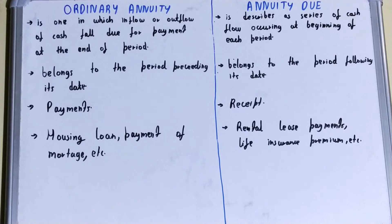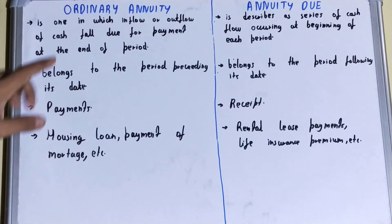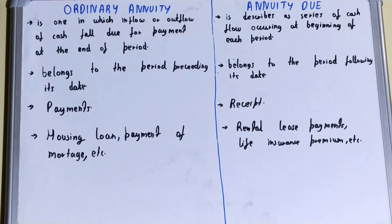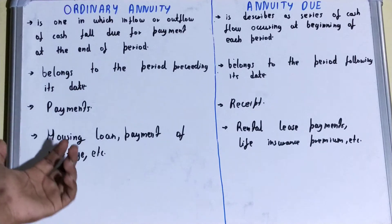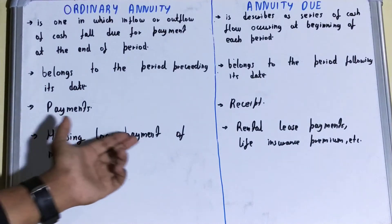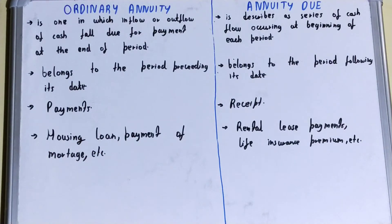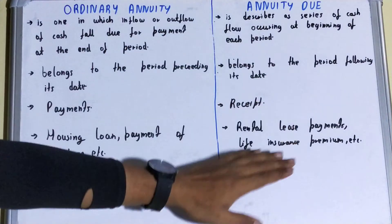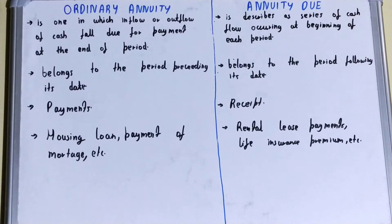Next, for what each is appropriate: ordinary annuity is appropriate for payments, whereas annuity due is appropriate for receipts. If we talk about examples, then for ordinary annuity the examples are housing loans and payment of mortgages, but for annuity due the examples are rental lease payments and life insurance premiums.